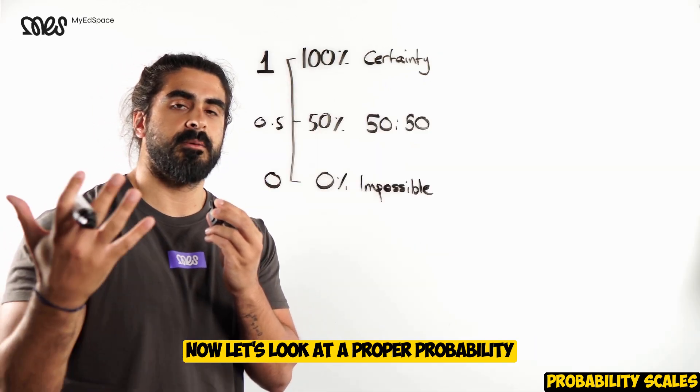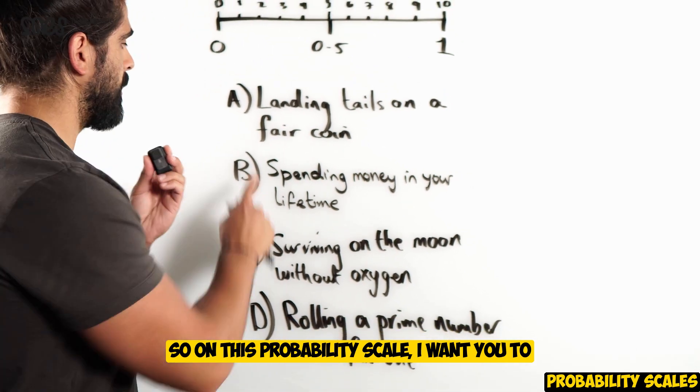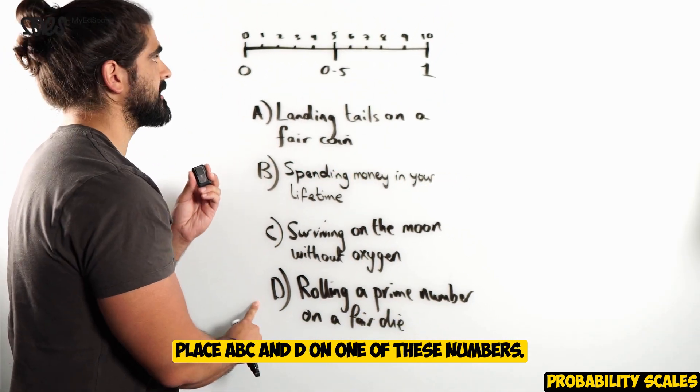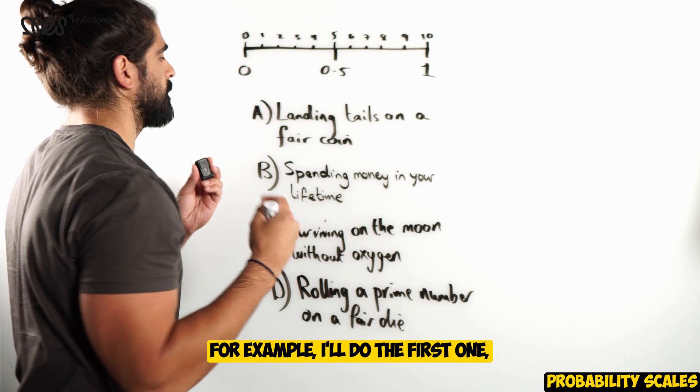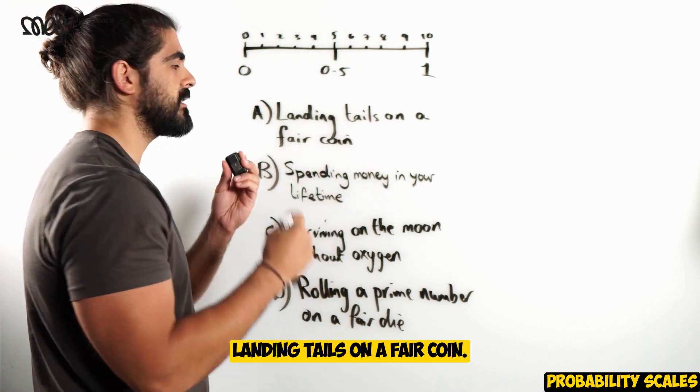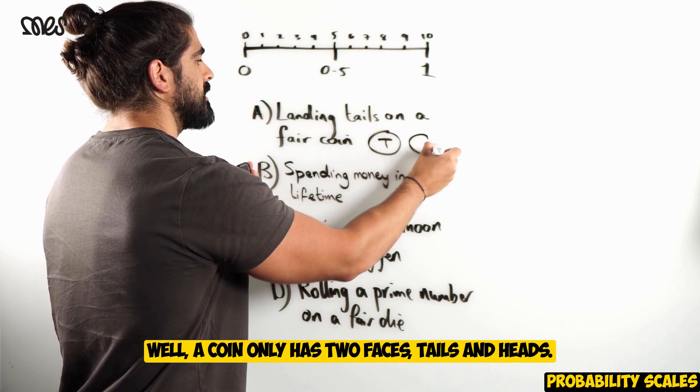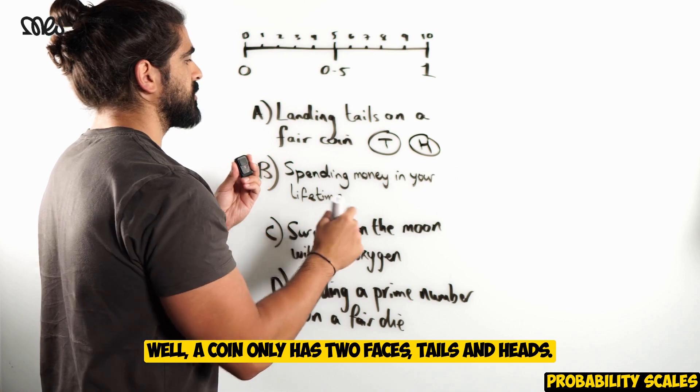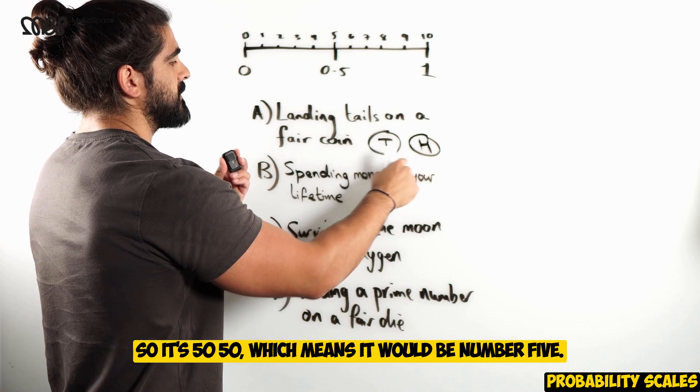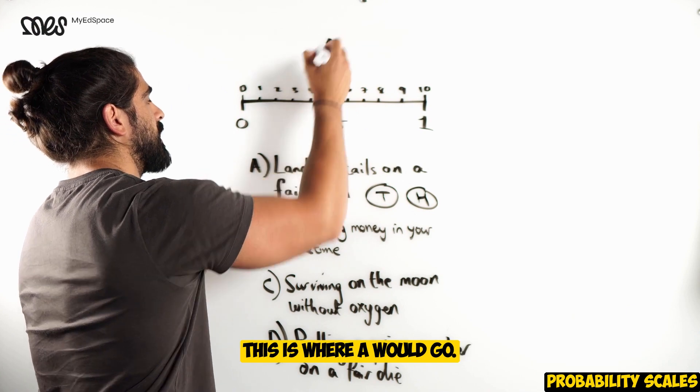Now, let's look at a proper probability scale and look at some examples. So on this probability scale, I want you to place A, B, C, and D on one of these numbers. For example, I'll do the first one. Landing tails on a fair coin. Well, a coin only has two faces, tails and heads. So, it's 50-50, which means it would be number 5. This is where A would go.